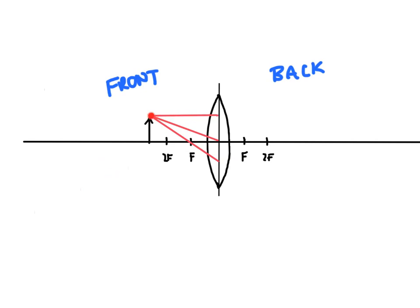When light rays pass through the lens they're going to bend. To find an image we draw three lines from the top of the object. We draw one line parallel to the principal axis — the center line that cuts through the middle — one line that passes right through the center of the lens, and one line that passes through the focal point. The parallel line travels through the focal point on the other side, the center line keeps going straight, and the line through the focal point travels parallel. The point where they all converge is the top of our image.